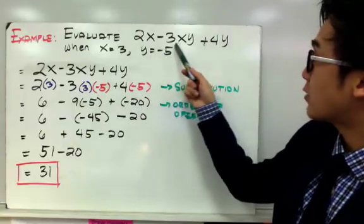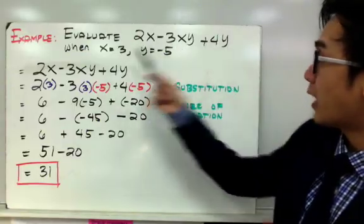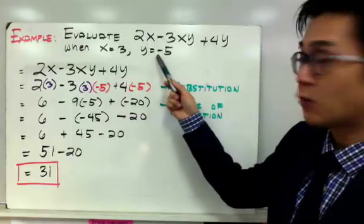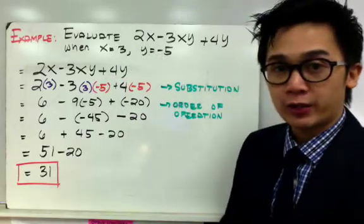So 2x minus 3xy plus 4y, when x is equal to 3 and y is equal to negative 5, is simply equal to 31.